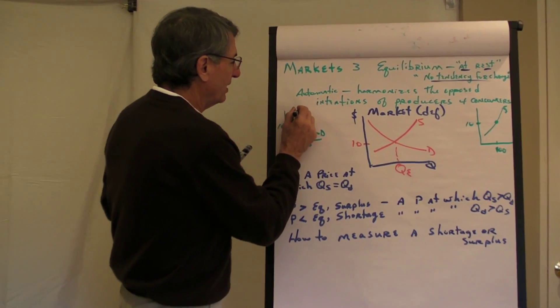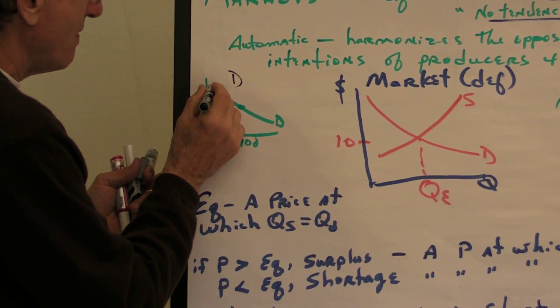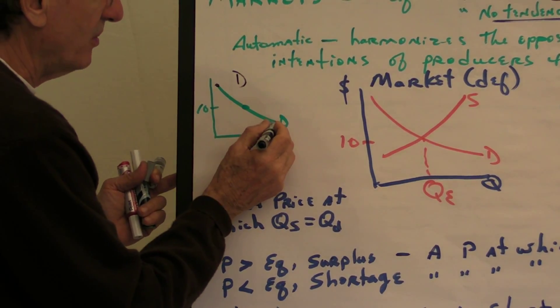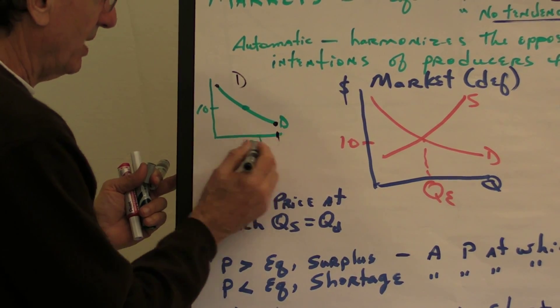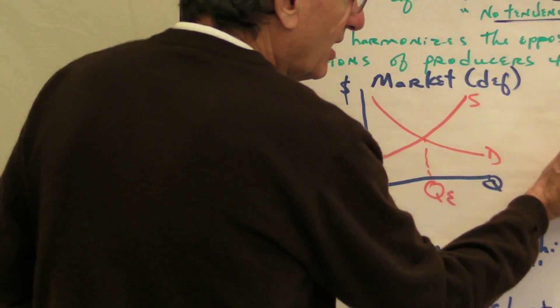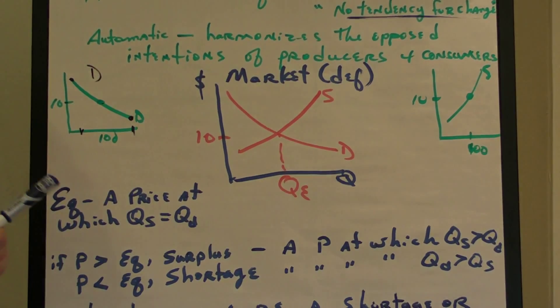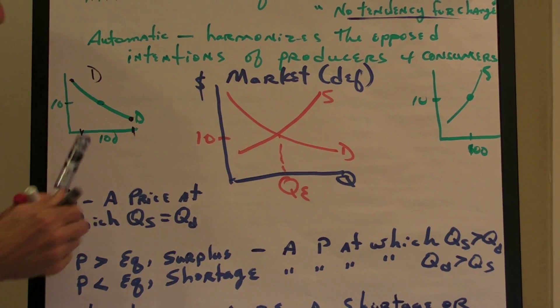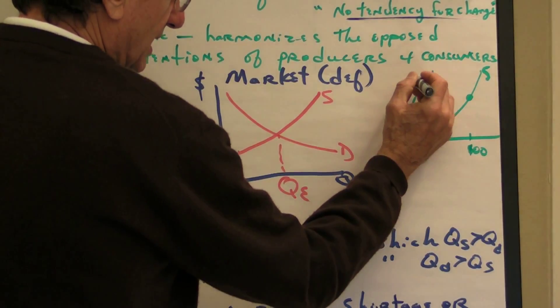We have over here the demand business with consumers saying, if the price is high, we don't want to buy many of them. But if the price is low, look how many we want to buy. And if the price is $10, we want to buy that much. Over here we have suppliers, based on their costs and technology and all that stuff, saying well, if the price is nice and high, like $20,